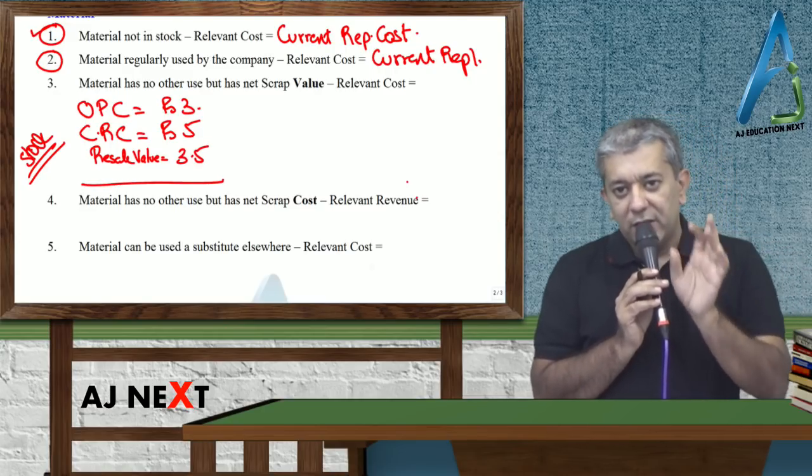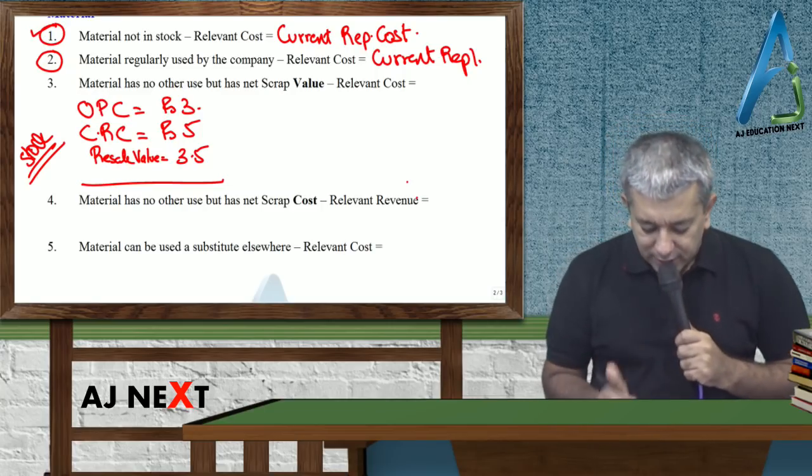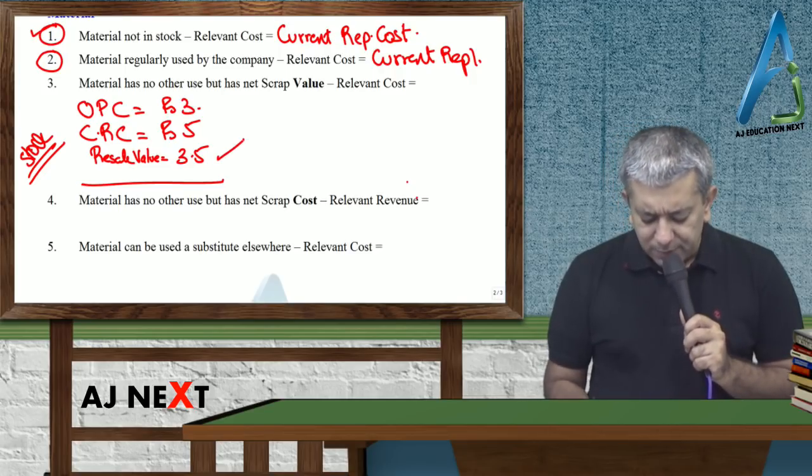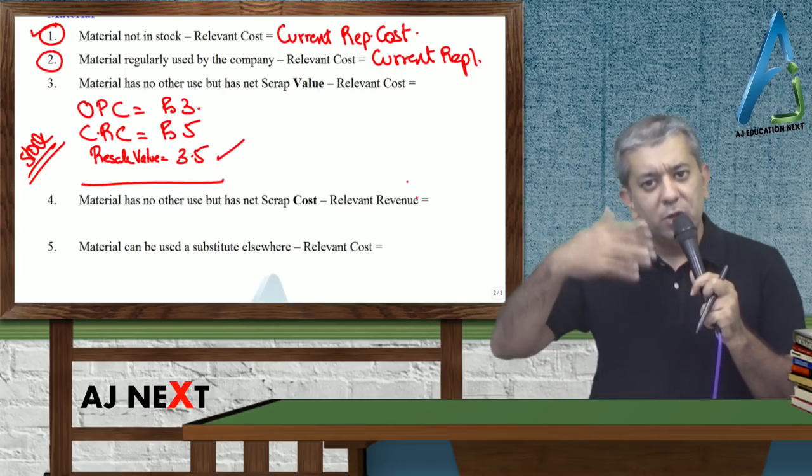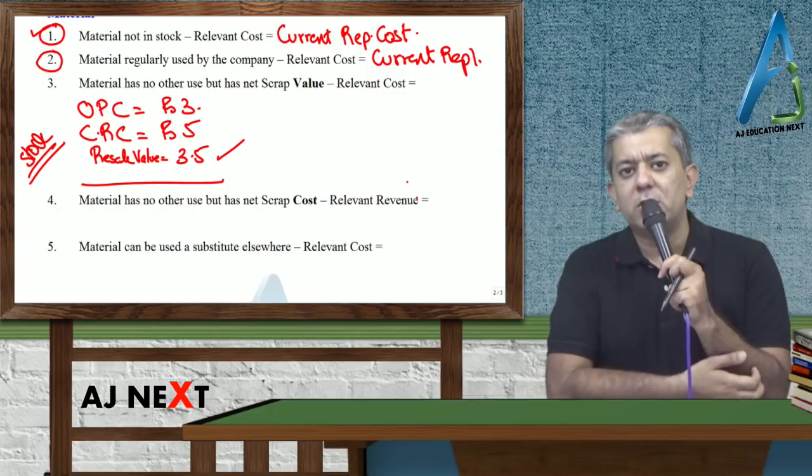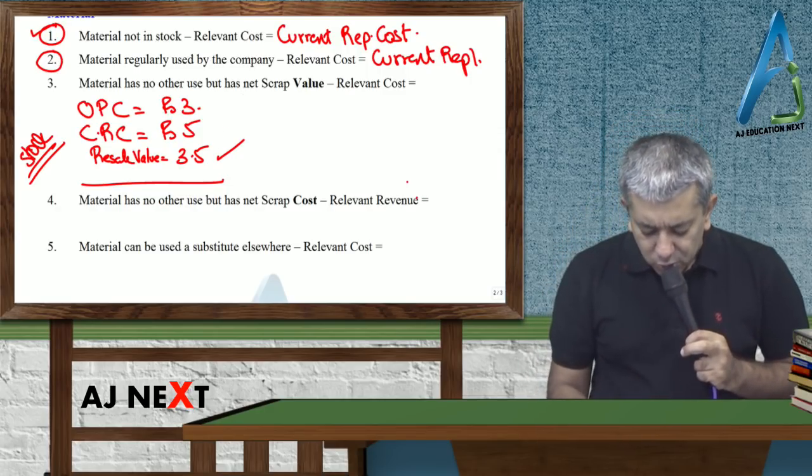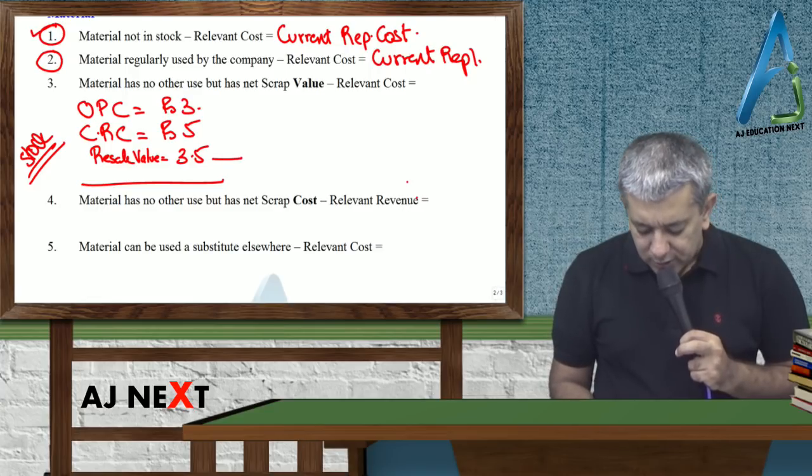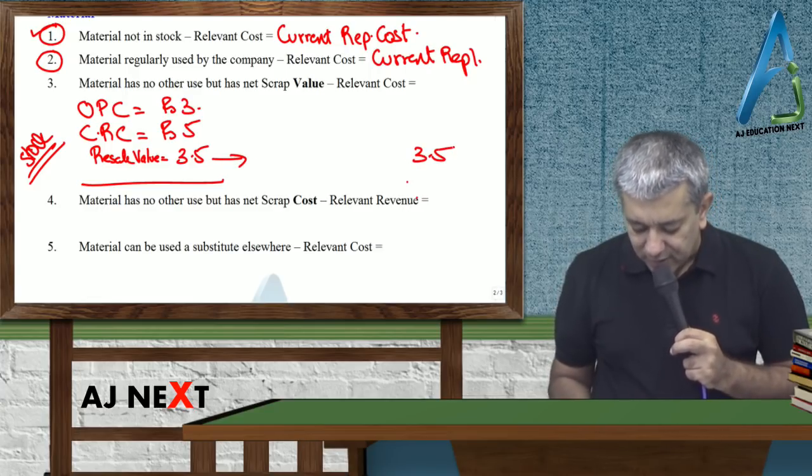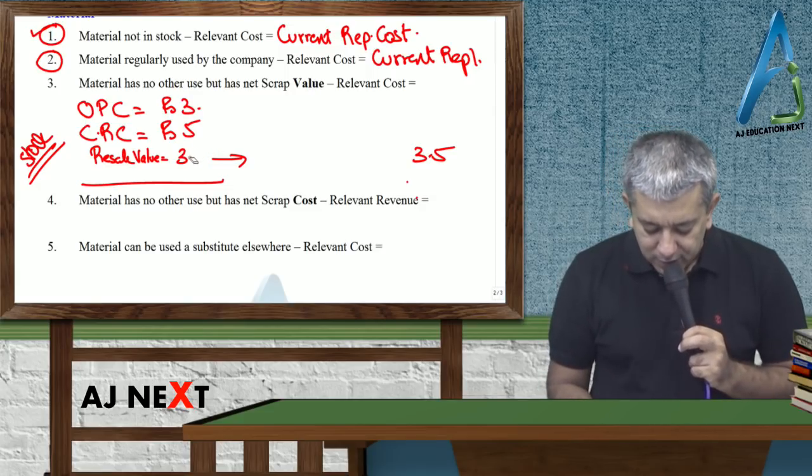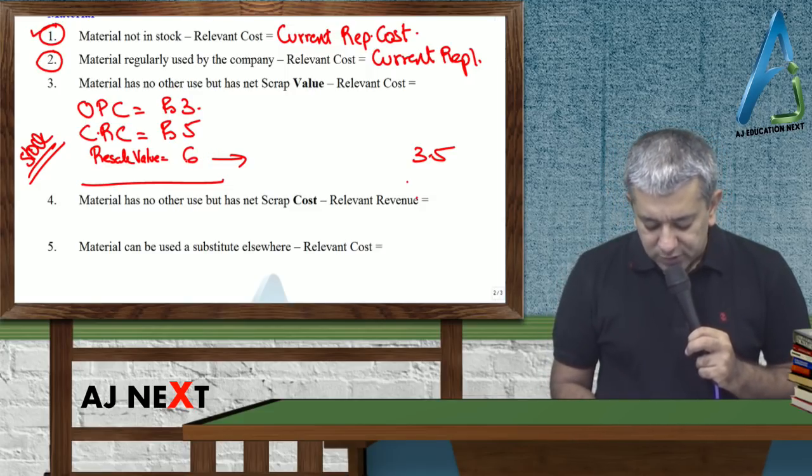Now think about it. If the offer doesn't come, this material has no other use, so we would sell it. If we sell it, how much would we get? 3.5. Now the offer has come, you need the material for the offer. So don't sell it, use it. If you use it, how many rupees will you lose? 3.5. So in such cases, the relevant cost will be 3.5. But now let me change one number. Let's make 3.5 into 6. Now think about it.